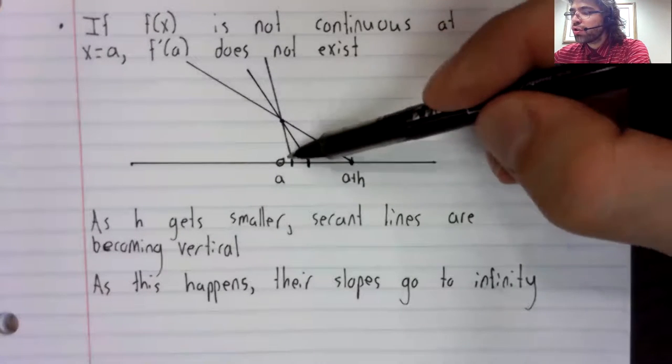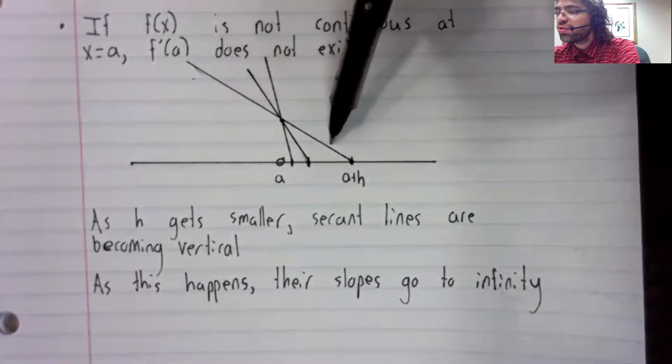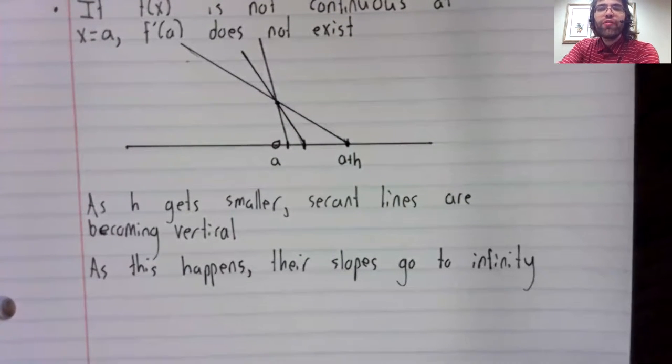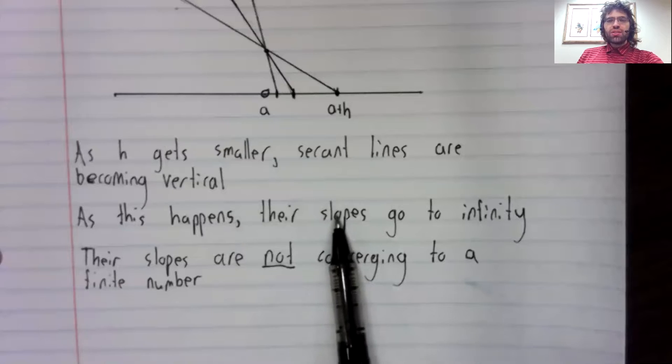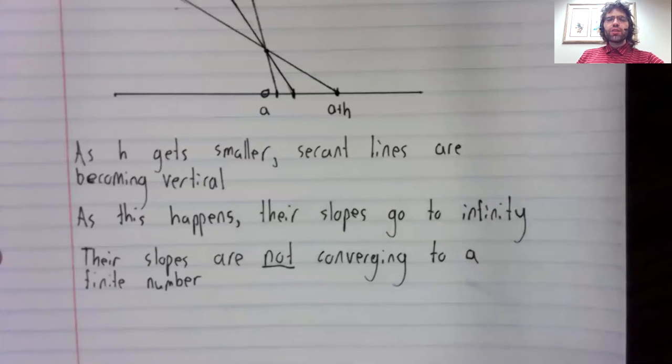This line has a greater slope than this line, has a greater slope than this line. In fact, their slopes are going to infinity, which means that their slopes are not converging to a finite number. And that means that the derivative doesn't exist. The derivative is supposed to be the limit of these slopes, but these slopes don't have a limit. They're going to infinity.